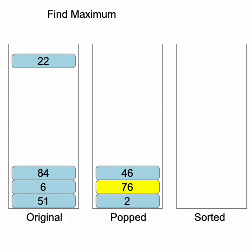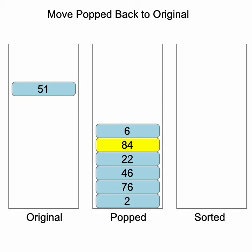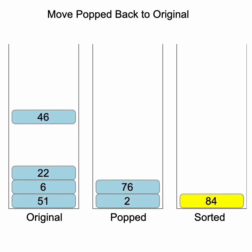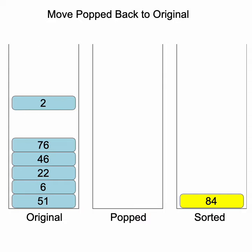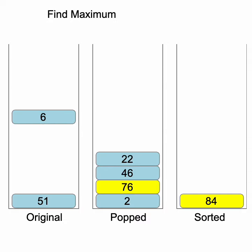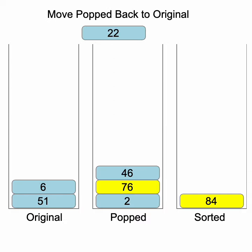To perform a selection sort, we find the maximum value and move it to the sorted stack. We repeat this process until all the elements have been moved to the sorted stack.